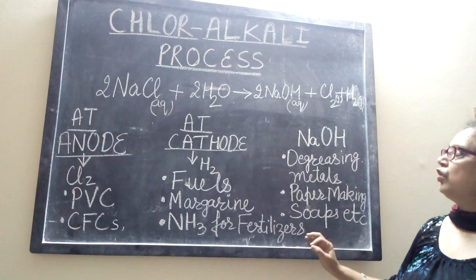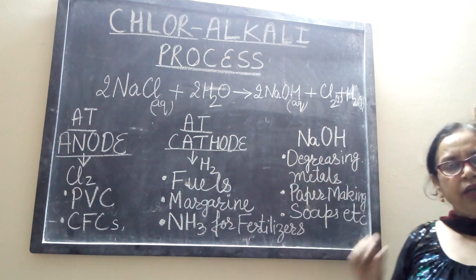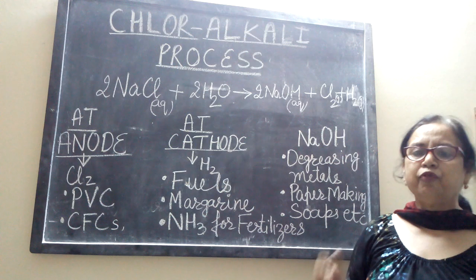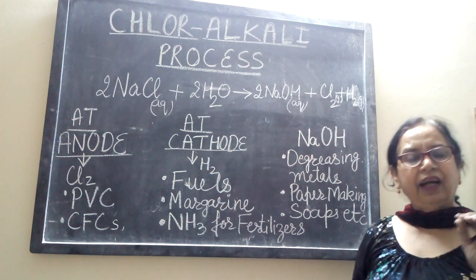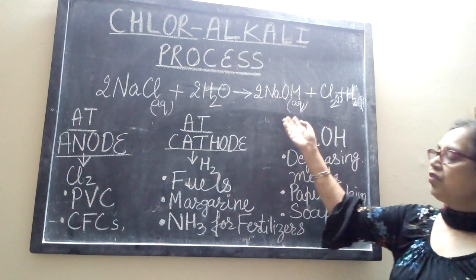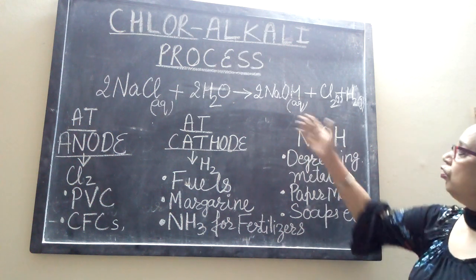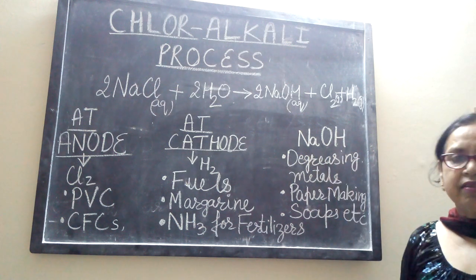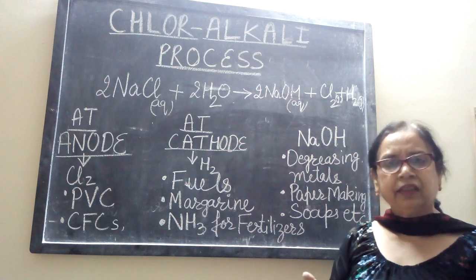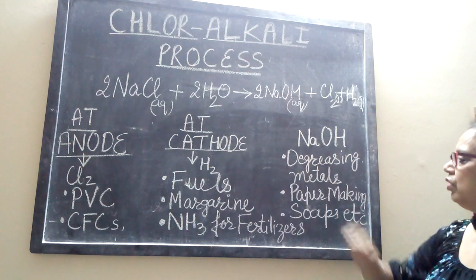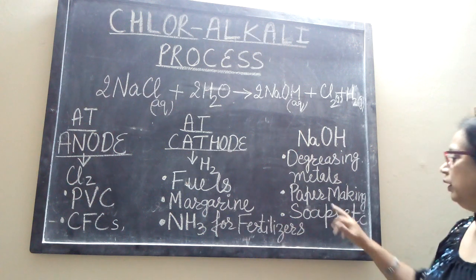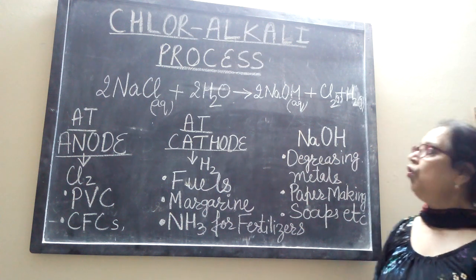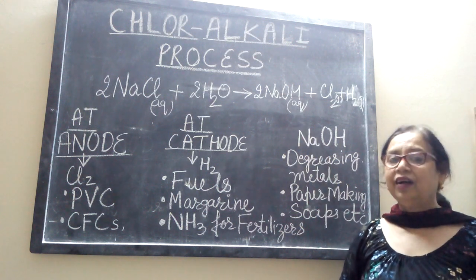The next very important product is sodium hydroxide. Sodium hydroxide is a solid — it exists in solid form, and in the lab we have pellets of sodium hydroxide. It is slightly soapy to touch and is a very strong base. It is used in the degreasing of metals — if a metal surface is sticky and dirty, an alkaline solution can be used for degreasing. It is also used in the paper-making industry, soap industry, and so on. This is all about the chloralkali process.